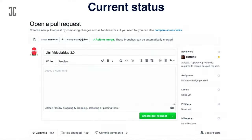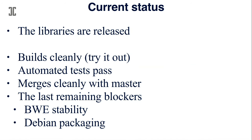What is the current status? We really hoped to show the merge pull request today, but we're not quite there yet. We underestimated the effort here and have been promising a release for months. We are very, very close. The libraries are released and available on GitHub and on our Maven repo. The new version of the bridge builds cleanly and you can try it out. Automated tests pass, and it merges cleanly with master. We have two remaining blockers: one is figuring out some instability with bandwidth estimation, and the second is figuring out how to do versions in the Debian package so we don't break everyone's deployment.